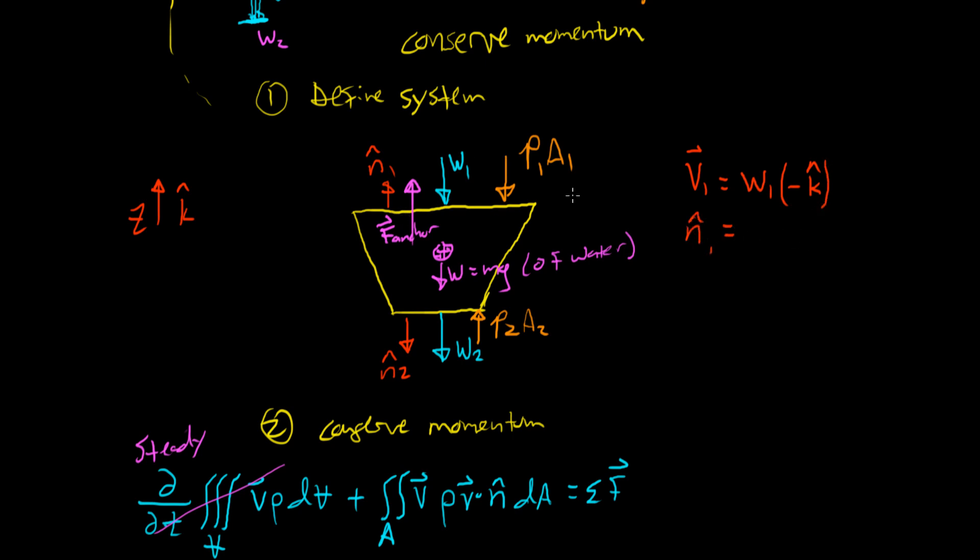V1 is the velocity coming into this thing. That has magnitude W1 that was given in the problem. And it's moving downward, which is the negative K hat direction. N1 is pointing straight up. That's the positive K hat direction. And so V1 dot N1 is equal to W1 times minus K hat dotted with K hat, which is just equal to minus W1.